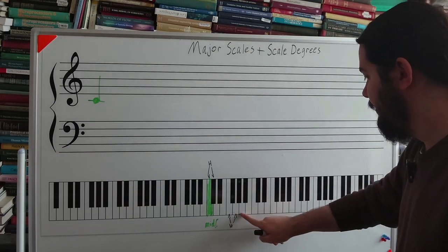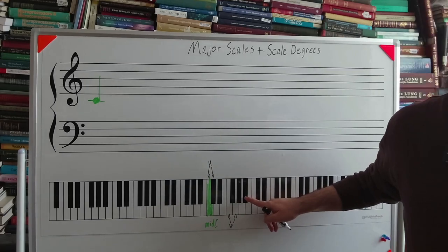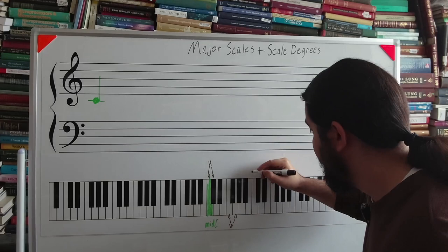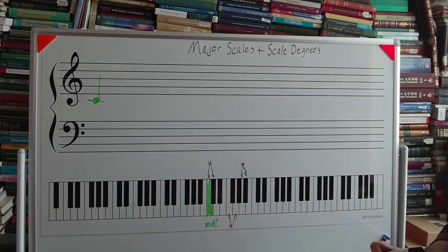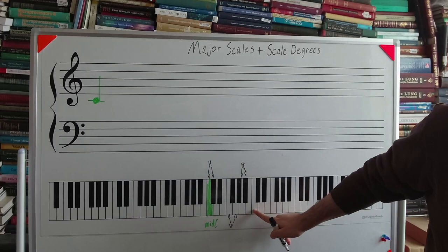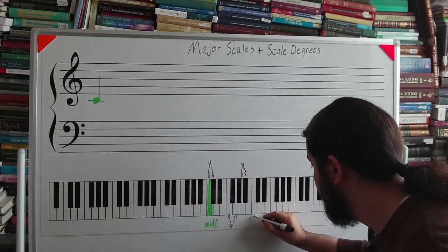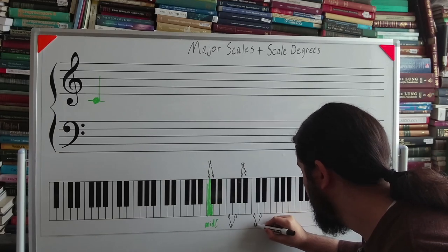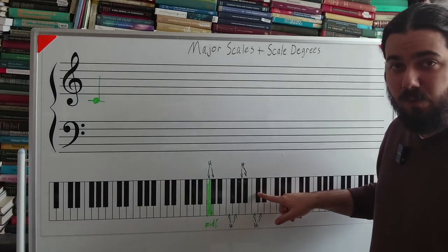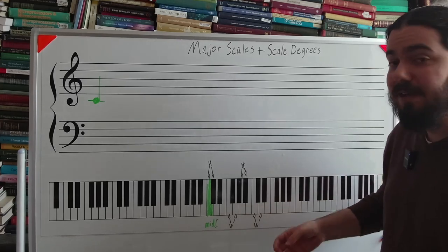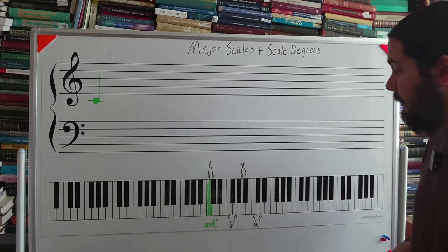Let's do a couple more examples so that you get a better idea. Let's take this A. The distance from this A up to this B flat, because they're immediately next to each other, that is a half step. The distance from C to D, that is a whole step. Again, a whole step is two half steps. So from C to C sharp is one half step. From C sharp to D is another half step. Therefore the distance from C to D is a whole step. I think you get the picture.